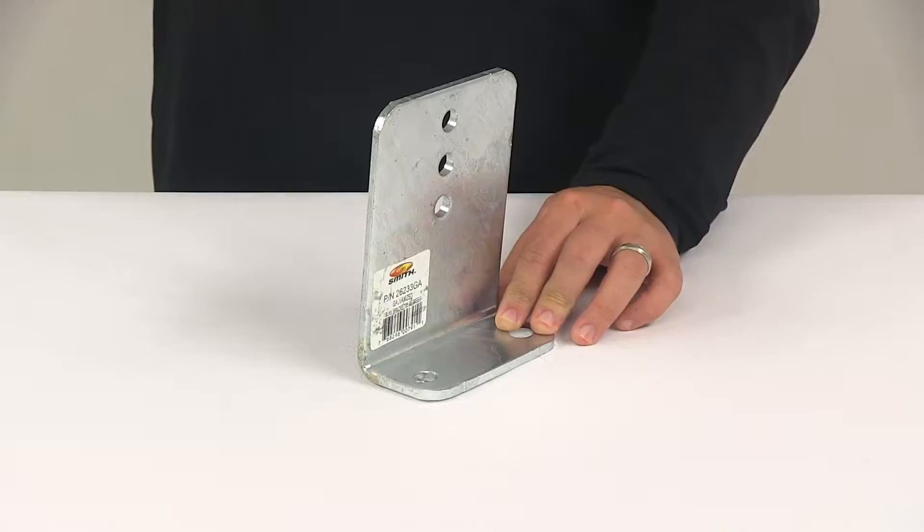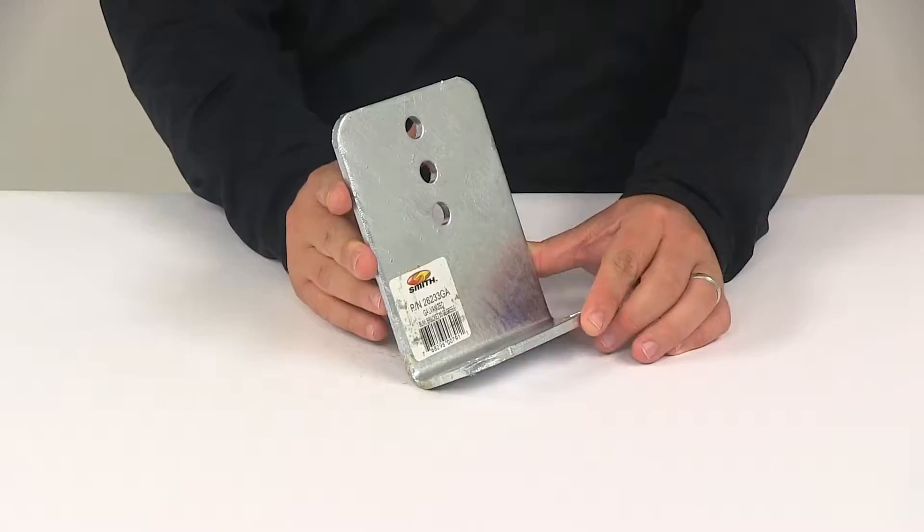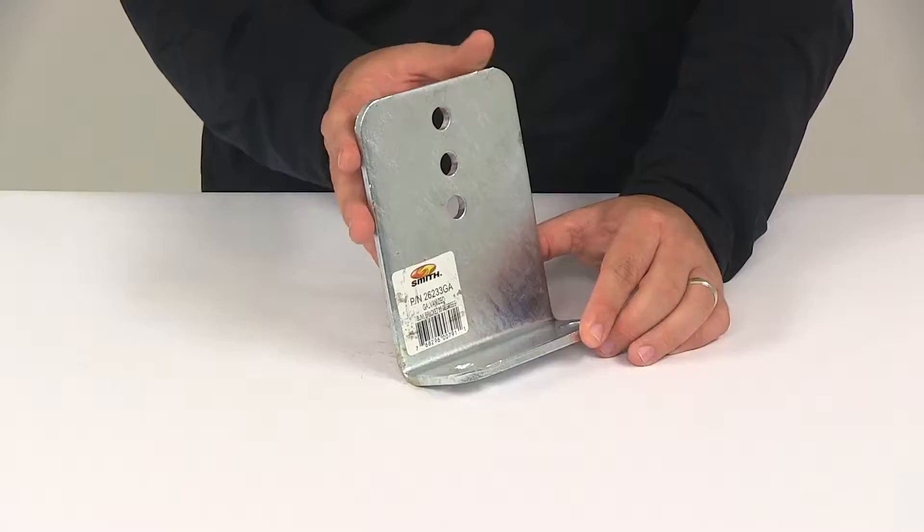Today we're going to be taking a look at the replacement C.E. Smith heavy duty vertical bunk bracket. This replaces one damaged C.E. Smith heavy duty 85 degree vertical bunk bracket on your trailer.